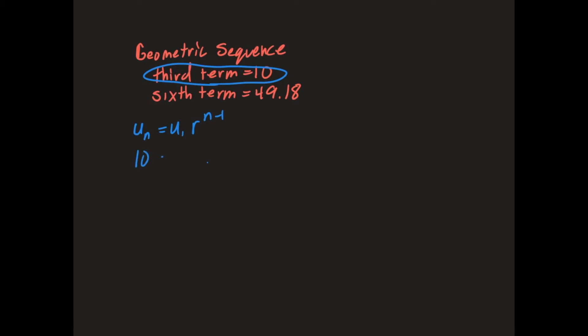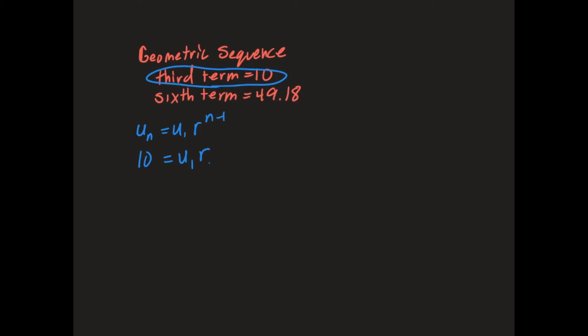So 10 equals the first term, which I don't know what it is, times R, which I don't know what that is, to the n minus 1. But because this is the third term, it'll be 3 minus 1.